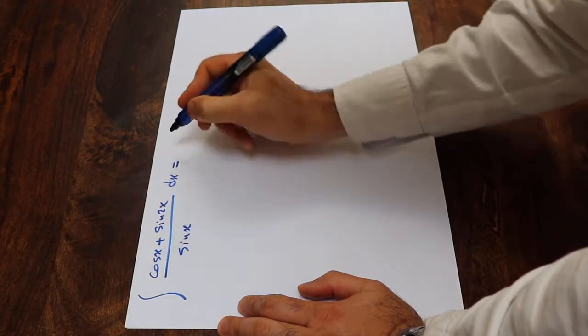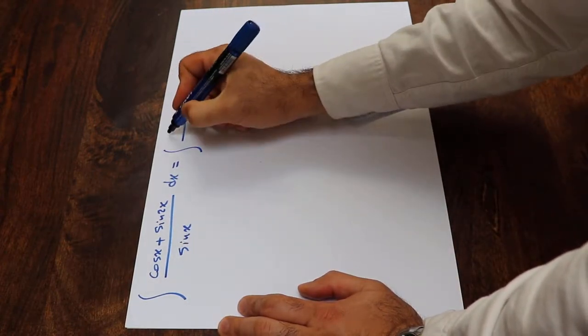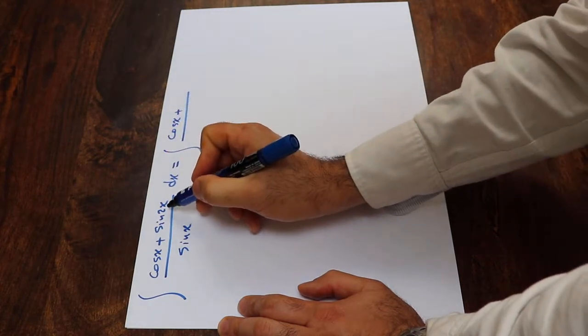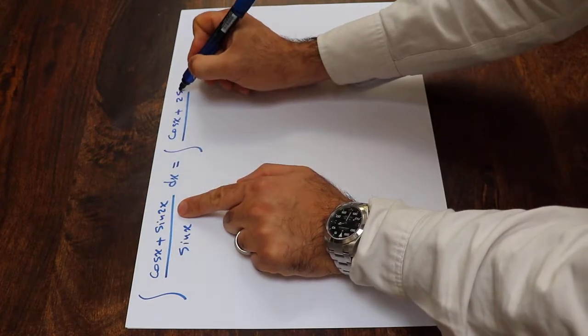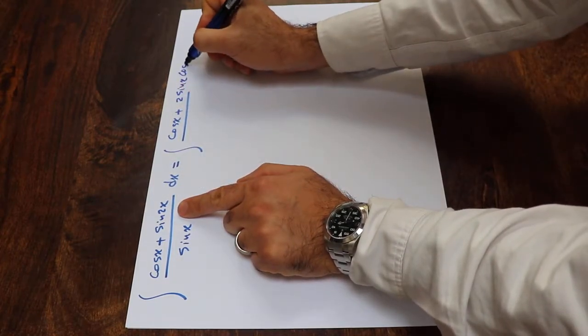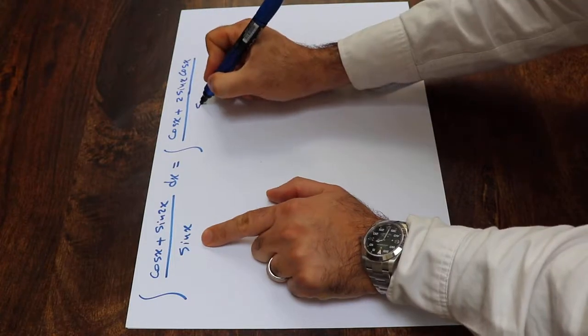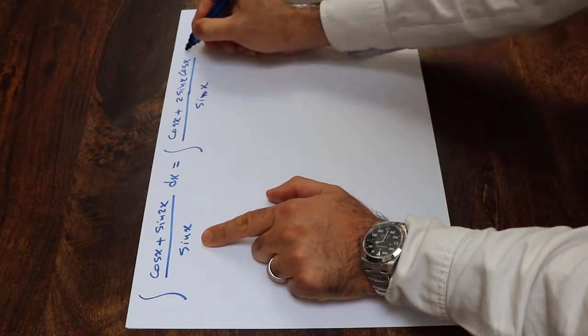You can rewrite this integral as integral of cosine x plus, instead of sine 2x, from trigonometry we know that sine 2x is equal to 2 sine x cosine x, divided by sine x dx.